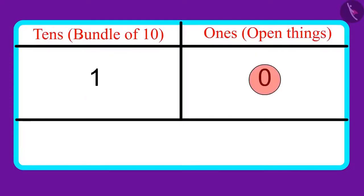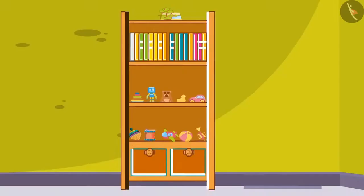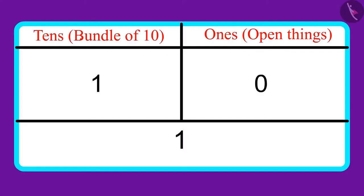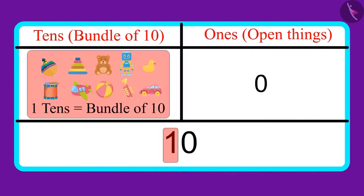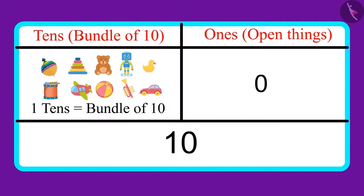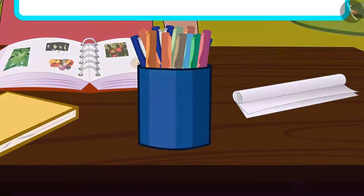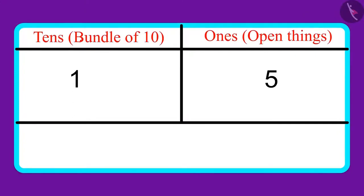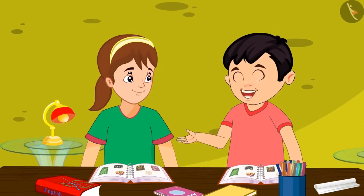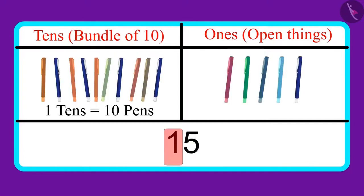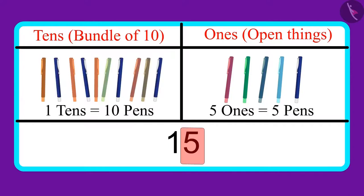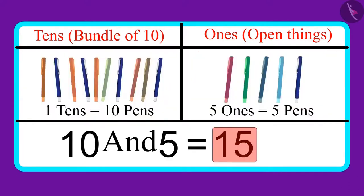There are 1 ten and 0 ones in the number of toys. Is this wrong, Chotu? 1 ten and 0 ones means you have just 1 toy, but there are many toys in the cupboard. No, Aarti, it doesn't mean 1. 1 ten means a bundle of 10 — that means I have 10 toys. So children, 1 ten and 0 ones make 10. Now I will tell you the number of colorful pens I have. There are 1 ten and 5 ones in the number of pens. So you have 1 and 5, that is only 6 pens. No, Aarti. You added 1 and 5, which is wrong. 1 ten means 10 pens, and 5 ones means 5 pens. That means I have 10 and 5 — 15 pens.